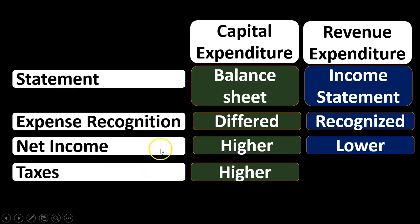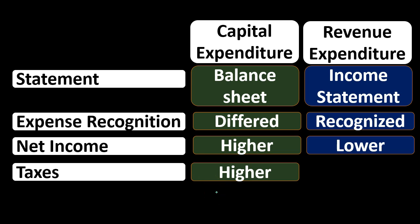From a tax standpoint, the capital expenditure results in higher taxes in year one because of the higher net income — we're only expensing depreciation, not the entire cost. It is a timing difference, however, and in later years the capital expenditure produces lower income as we depreciate it, working itself out over the life of the asset. For tax purposes we would typically want to lower taxes early because of the time value of money — we'd rather have lower taxes now and higher taxes later, unless tax rates are expected to rise.